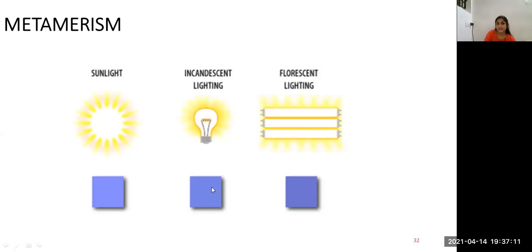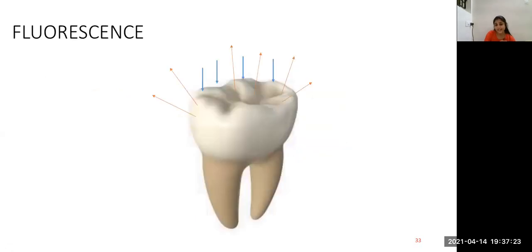Metamerism: A particular color appears bright under sunlight and the same color appears dim in certain lighting conditions. Natural tooth absorbs light of shorter wavelength and emits light of longer wavelength. This gives the tooth a lively appearance. This property is called fluorescence.